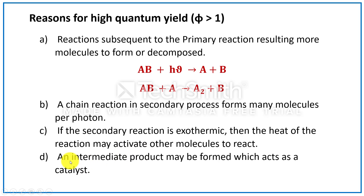Another reason is that an intermediate product may be formed which acts as a catalyst. In the secondary process, any product formed may act as a catalyst so that the rate of the reaction will be increased and more product will be formed.